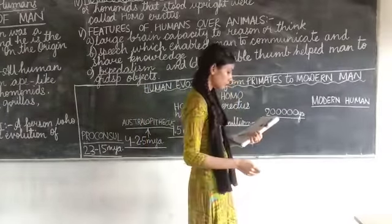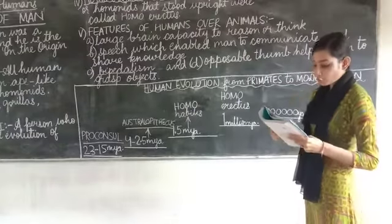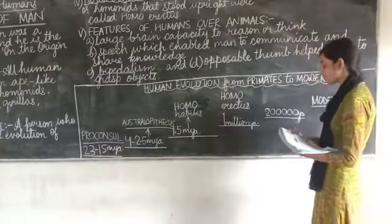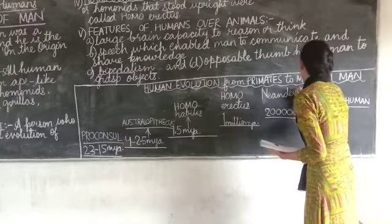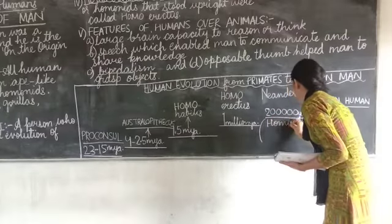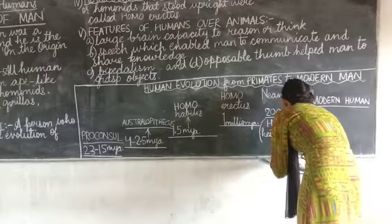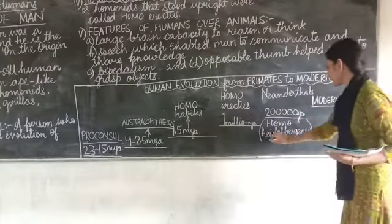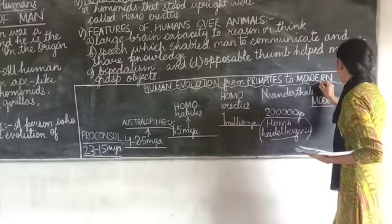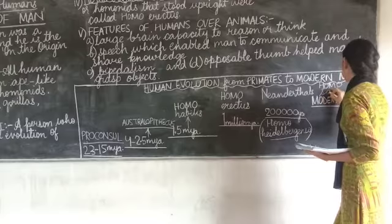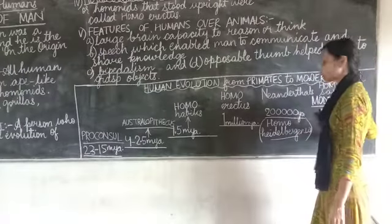200,000 years ago we were Neanderthals — also referred to as Homo neanderthalensis. And now we are modern humans. Modern humans are called Homo sapiens — we are Homo sapiens. This is the modern time.